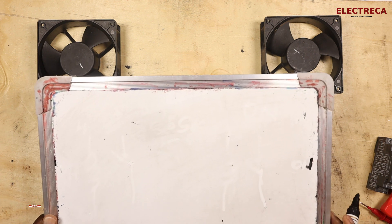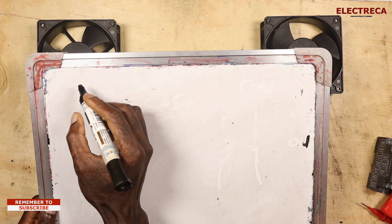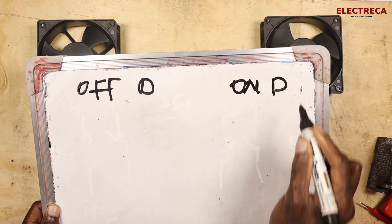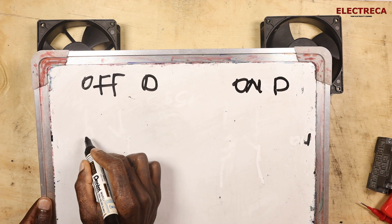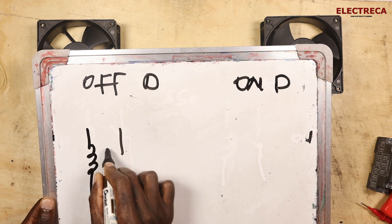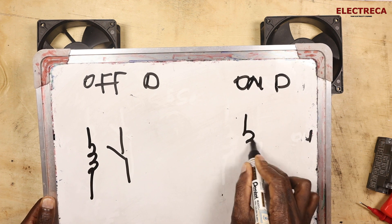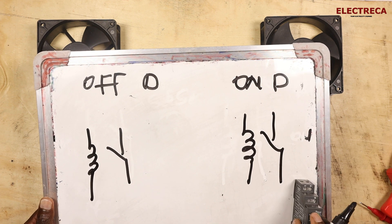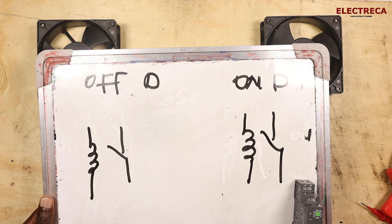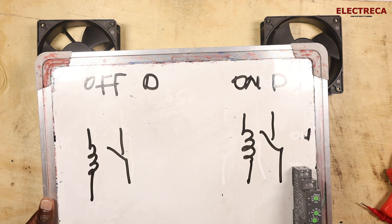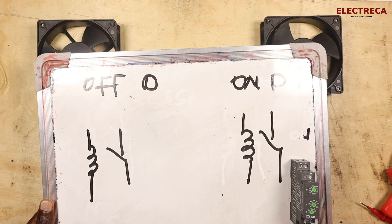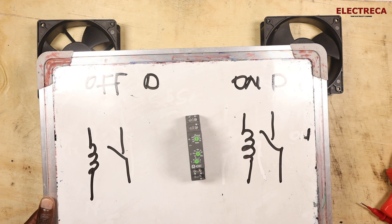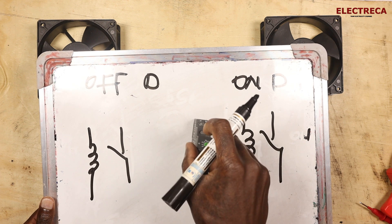We have off delay and then we have on delay. So what you do, you have a coil here with contact open. What you have to remember is this is a timer, so in here you have got a relay. Because this has got two contacts, this timer has got two contacts. It's a single pole double throw.